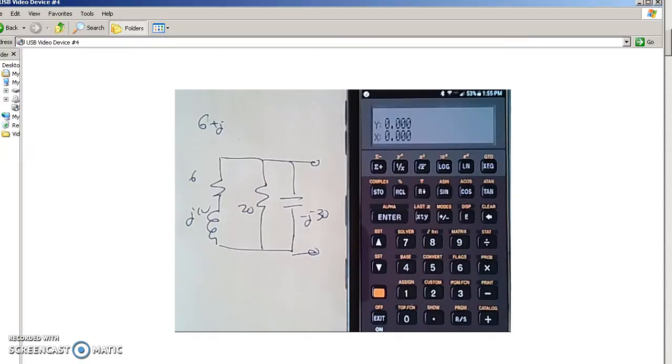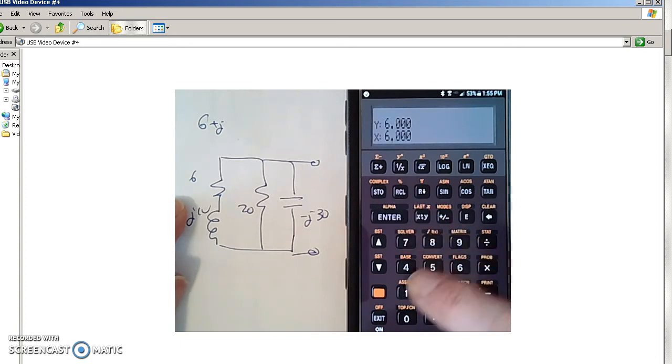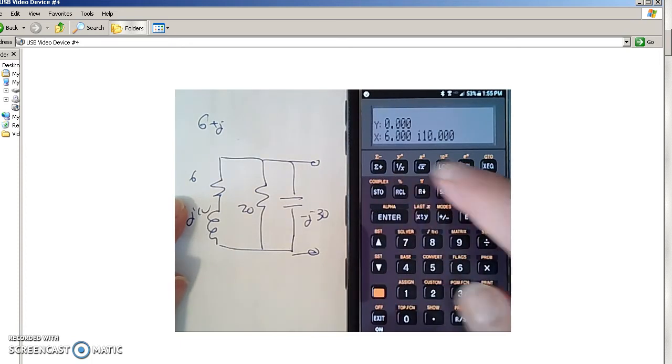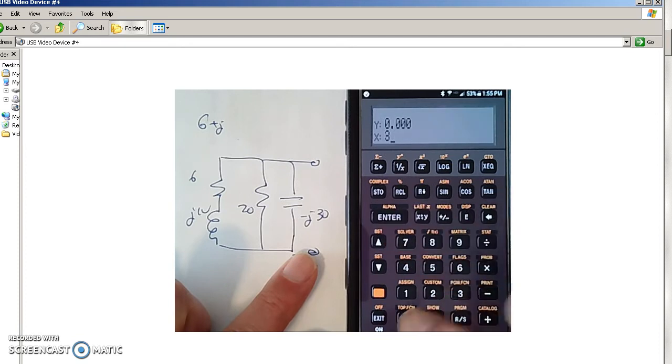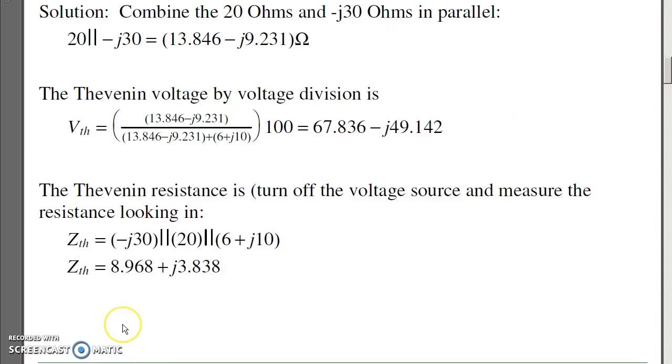Going back to our trusty HP calculator, that would just be 6 plus j10, 6 enter 10 complex, and parallel with 20 ohms, and parallel with minus j30. Take the total, that's 8.98 plus j3.88 ohms. So, voila, you get the Thevenin equivalent.